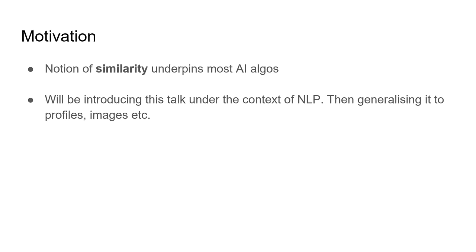We're going to build on the previous two sets of slides and dive deeper into how machines think about language, then look at examples of generalizing this principle to profiles, search, images, and even CRMs. Let's get started with the meat of the talk: vectors.